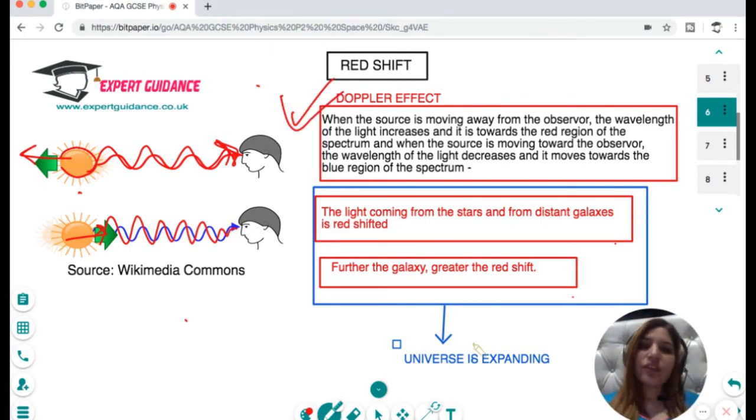This phenomenon is Doppler's effect. It says when the source is moving away from the observer, the wavelength of the light increases and it is towards the red region of the spectrum. When the source is moving towards the observer, the wavelength decreases and it moves towards the blue region. The light coming from stars and distant galaxies is redshifted.